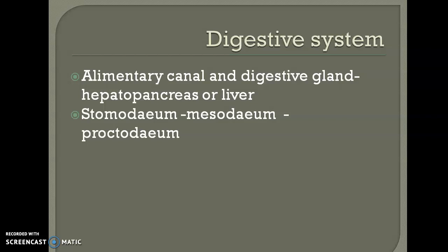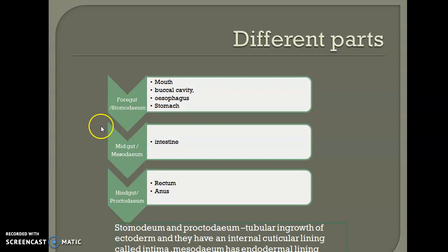The alimentary canal has three divisions: the stomodeum, the mesodon, and the proctodeum. The foregut or stomodeum consists of mouth, buccal cavity, esophagus, and stomach. The mesodon or midgut consists of the intestine. The hindgut or proctodeum consists of the rectum and anus. The stomodeum and proctodeum develop as tubular ingrowths of the ectoderm and so they have an internal cuticular lining called intima, while the mesodon has endodermal lining.